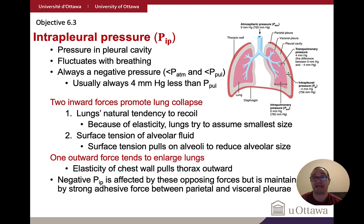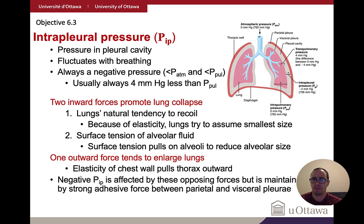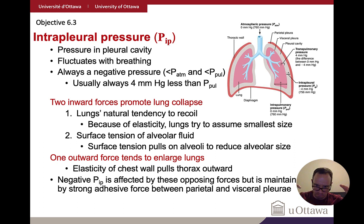Two forces act to promote lung collapse: first, the elastic nature of the lungs — due to elastic tissue in the bronchioles — which makes them tend toward the smallest size; second, alveolar fluid creates surface tension, also pulling the alveoli inward toward the smallest shape.